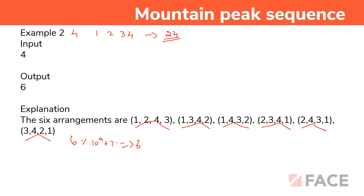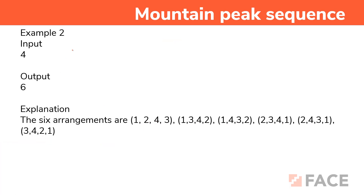Let us go for the logic of the program. The logic is very simple. If the input value is 1 or 2, there are 0 possibilities. If the input value is 3, starting from 1, 2 I add the number 3. The number 3 can only be placed before 2 to form 1, 3, 2 which looks like a mountain peak sequence. Taking the reverse gives 2, 3, 1. So these are the only 2 numbers which look like a mountain peak sequence.